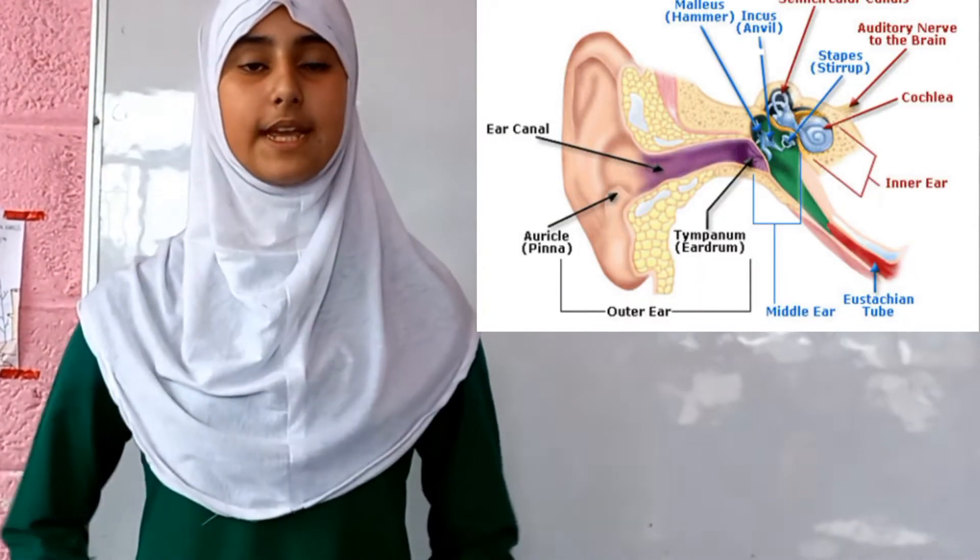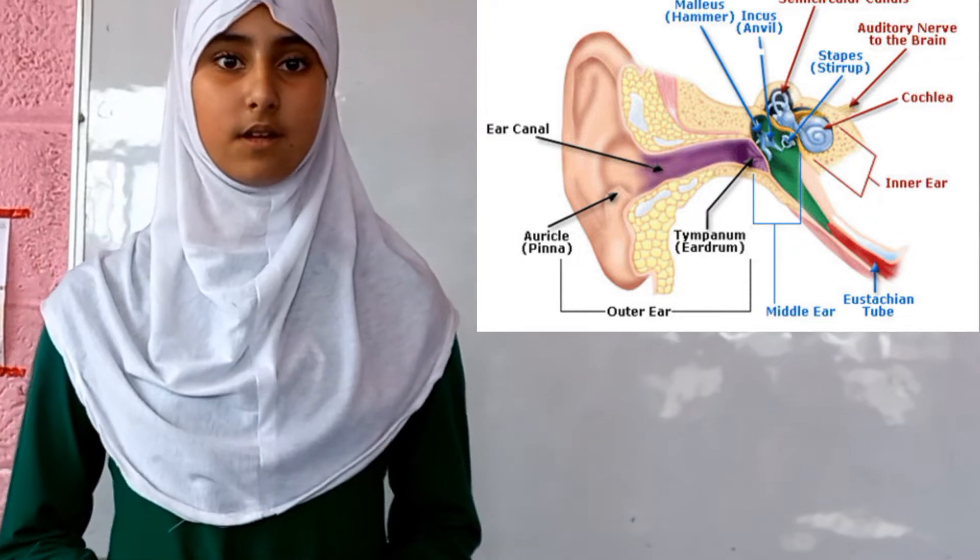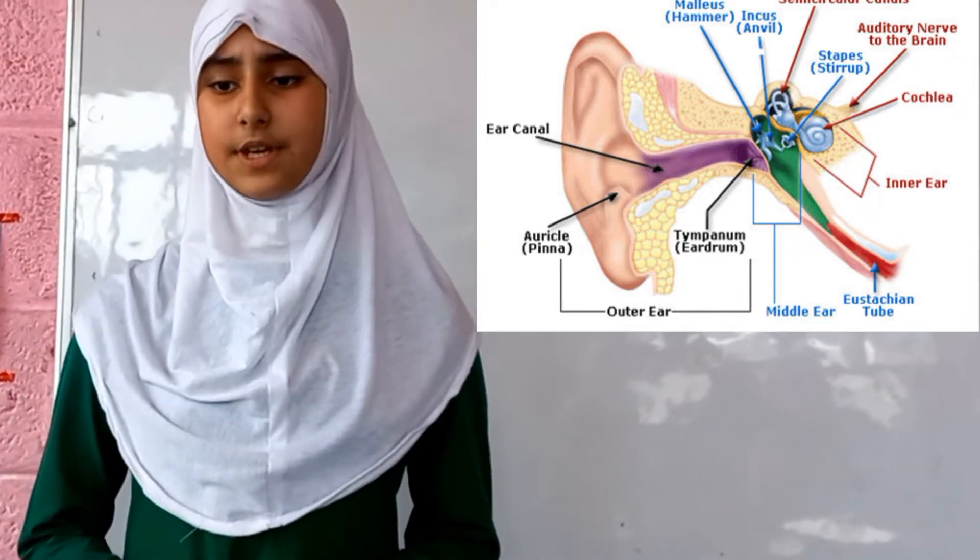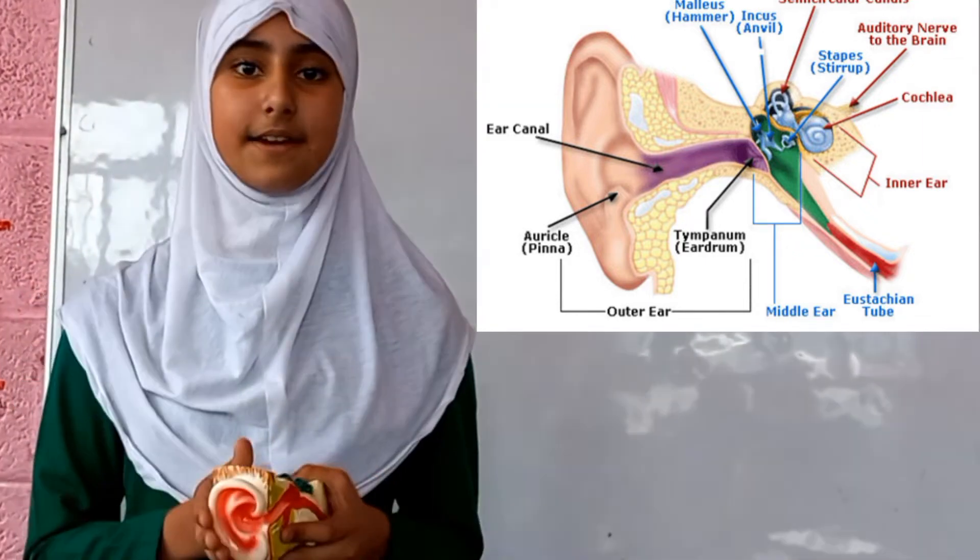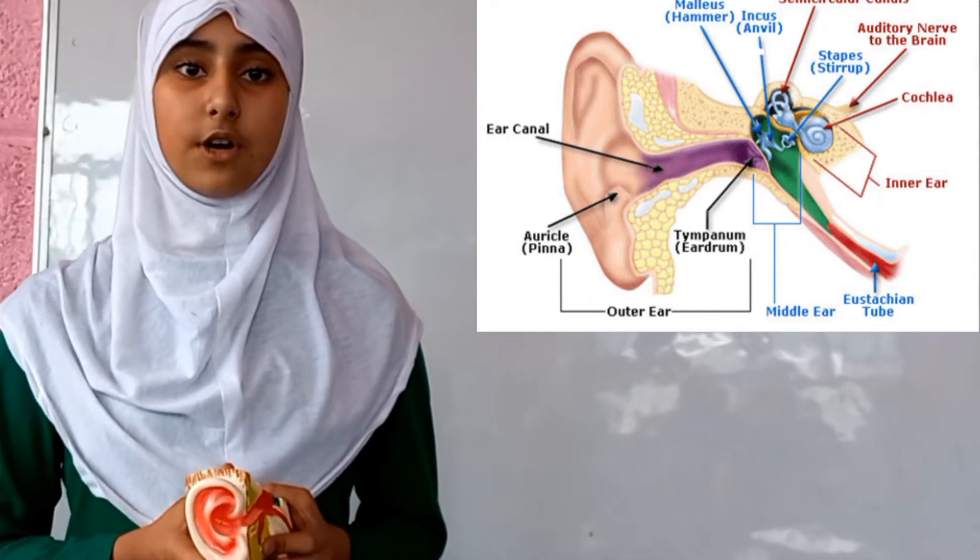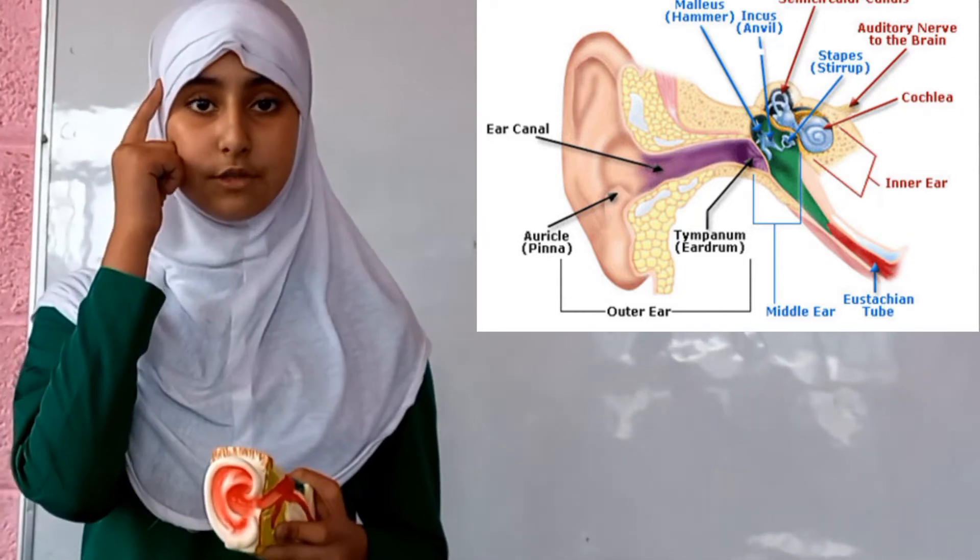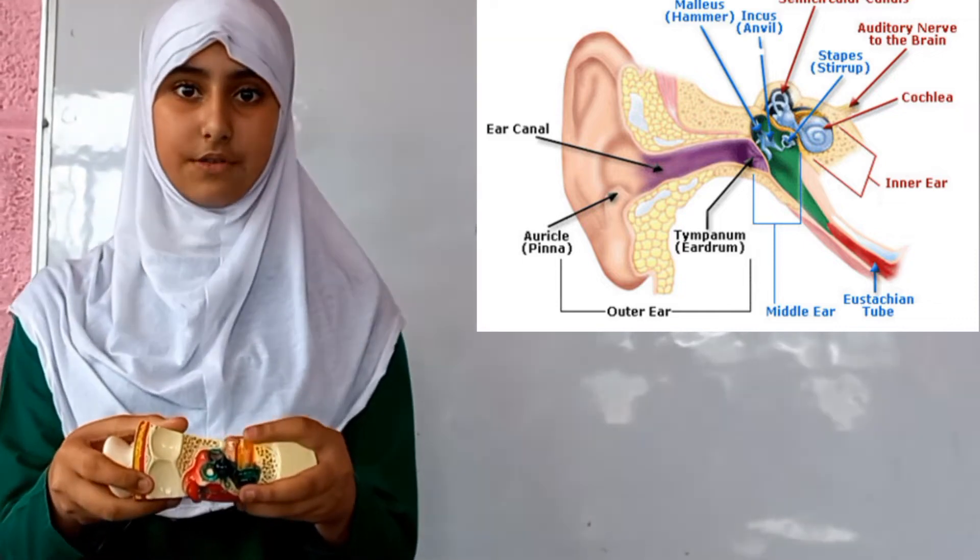Welcome to the presentation. We all know what helps us to hear. Yes, it is the ear. The ear converts audible sound frequencies to electric signals that travel to the brain through a nerve called the auditory nerve.